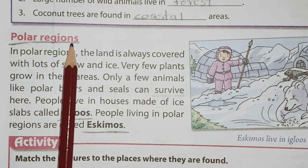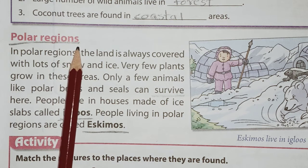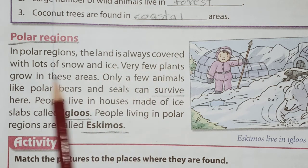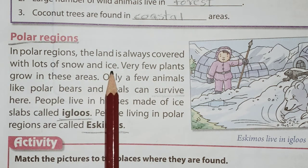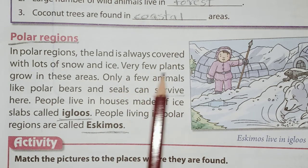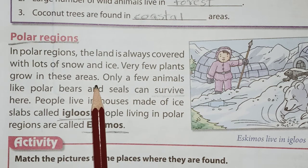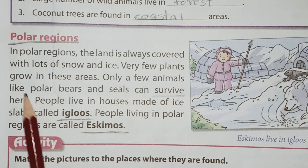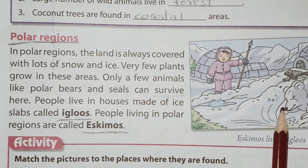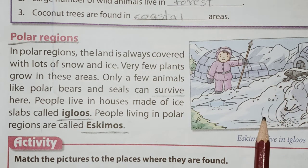The next one is polar region. Polar region is the region where you can see snow everywhere. In polar regions, the land is always covered with lots of snow and ice. Very few plants grow in these areas. Only a few animals like polar bears and seals can survive here because the region is very cold.